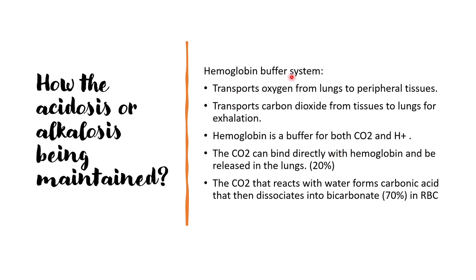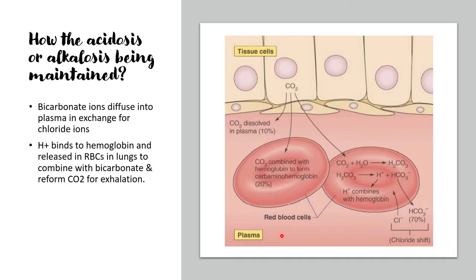The buffer systems help in maintaining pH. For intracellular buffering we have the hemoglobin buffer system. Hemoglobin transports oxygen from the lungs to peripheral tissues where respiration occurs, and it takes carbon dioxide from tissues to lungs for exhalation. Hemoglobin is a buffer for both carbon dioxide and the proton moiety. Carbon dioxide can bind directly with hemoglobin and be released in the lungs, or it can react with water to form carbonic acid which dissociates into bicarbonate in red blood cells.